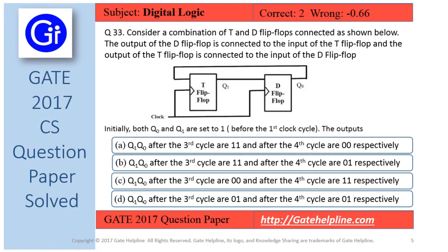As per our explanation, after the third clock cycle Q1 and Q0 are 1 and 1, and after the fourth clock cycle Q1 and Q0 are 0 and 1. Therefore, the answer to this question is option B.